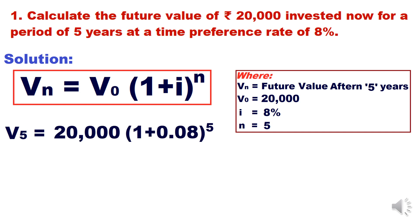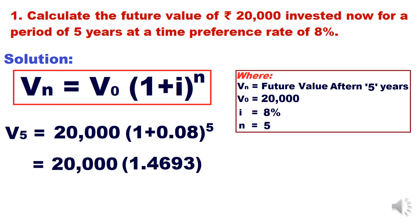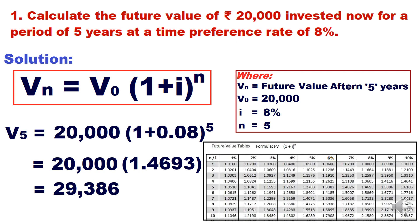Applying the formula: V5 = 20,000 × (1 + 0.08)^5. We write 8% as 0.08 (i.e., 8/100). Simplifying, (1.08)^5 = 1.4693, so the answer is 20,000 × 1.4693 = ₹29,386. This means if you deposit ₹20,000 today at 8% interest compounded annually, you will receive ₹29,386 after five years.